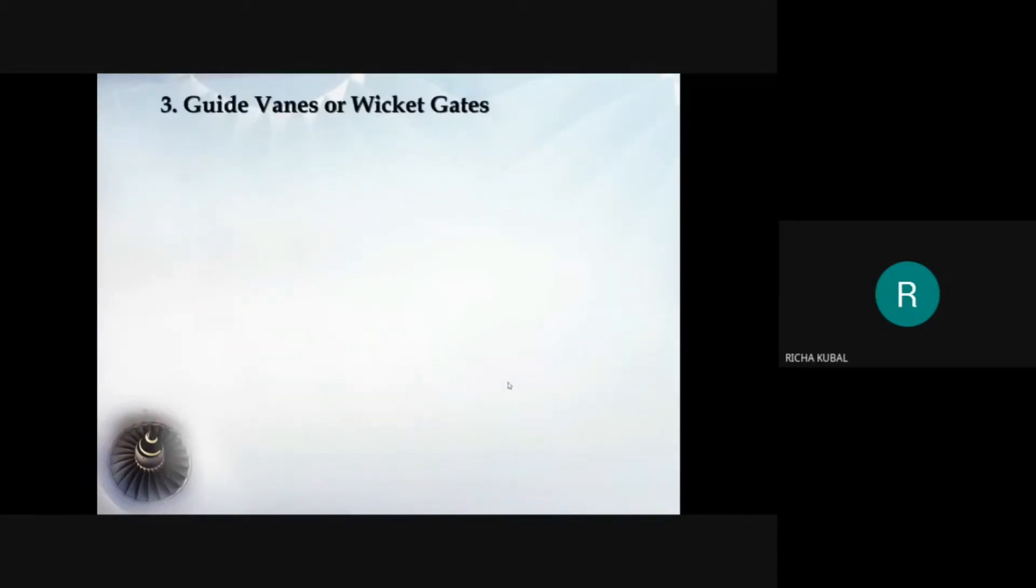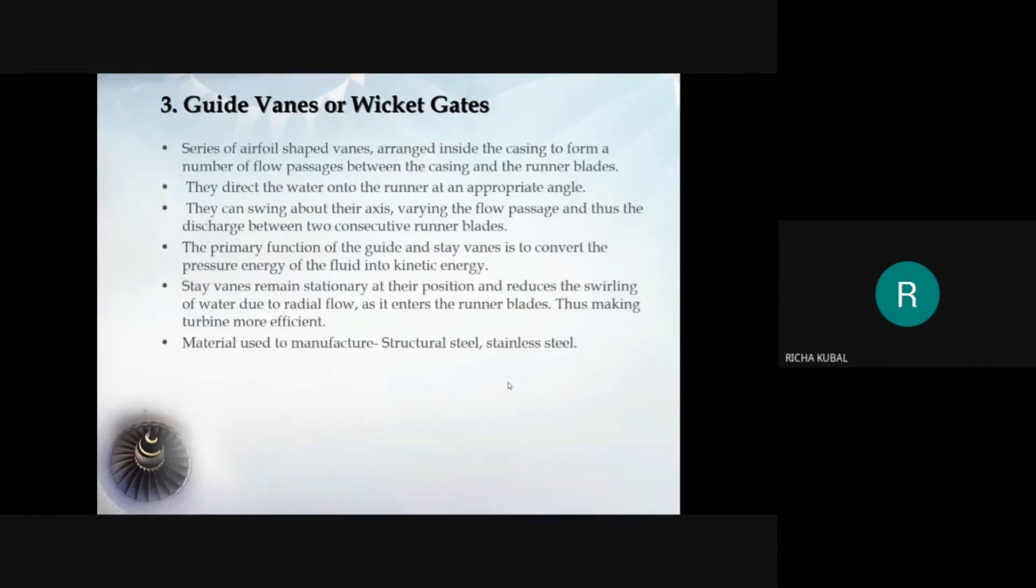Third important component is the guide mechanism. It consists of stationary ring in a form of wheel called as guide wheel. It surrounds the outer periphery of runner and is fixed to inner surface of casing. In between the outer and inner ring of guide wheel, there is a series of guide vanes or also known as wicket gates of aerofoil section present. This gate forms number of passages between casing and runner blades.